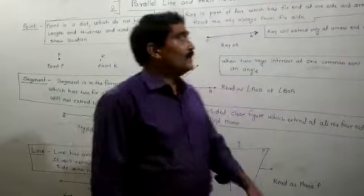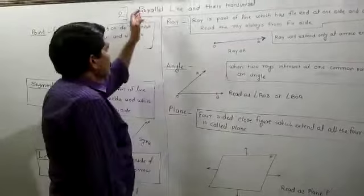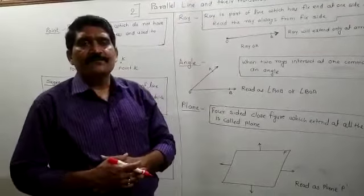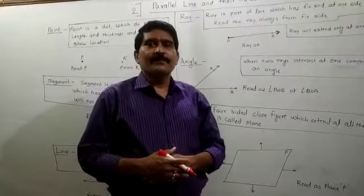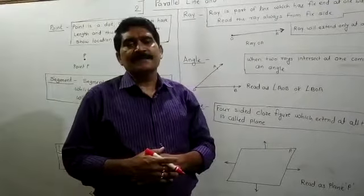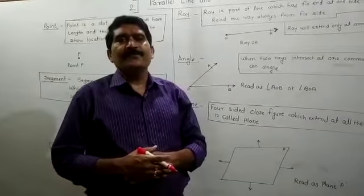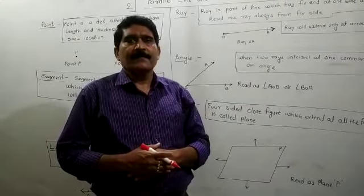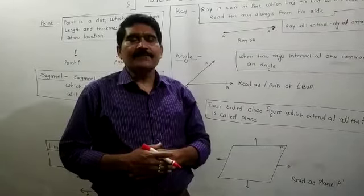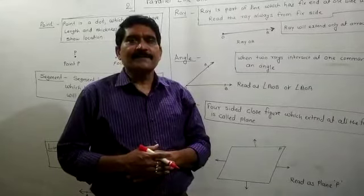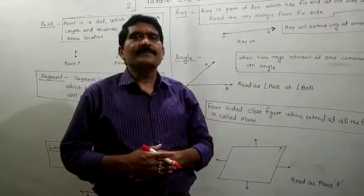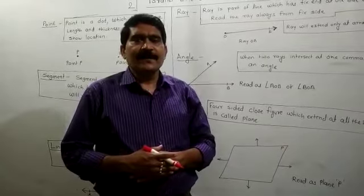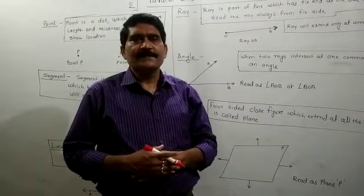We have to start with the new lesson: Parallel Lines and their Transversal. This is a lesson of geometry. Before I start this lesson, I have to give some basic points of geometry. We already learnt these points in lower standards — from 5th standard, 6th standard, and 7th standard. I am going to revise those points now.